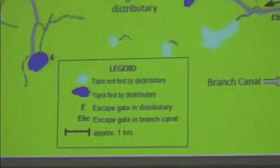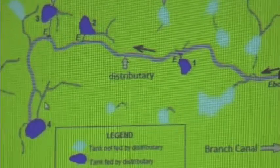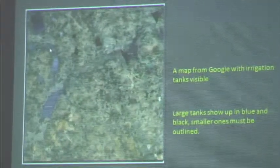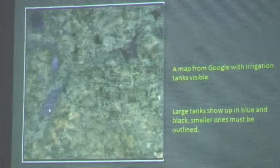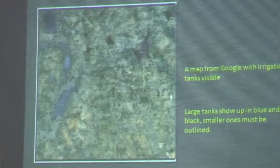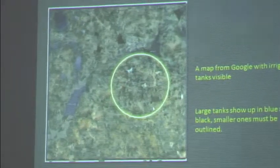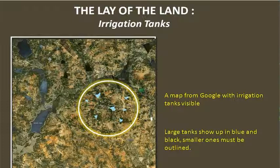If you look at Google Maps, you will see these blue-colored irrigation tanks, which will also appear in black. You will also see that they are all sort of connected — if this tank is full, water will flow through into the next tank, and then into the next. So it is an integrated system of tanks. If you look at an area like this very carefully, you will find some more tanks there. The tanks may not be visible because this is summer and those small tanks are probably dry, so they don't show up in blue. But actually, there are lots and lots of tanks all over the place.